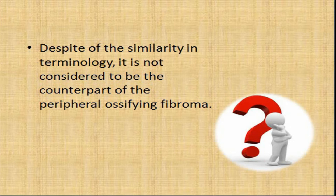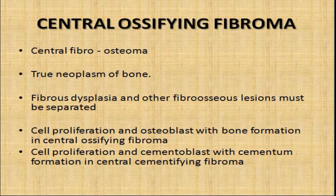The synonym for central ossifying fibroma is central fibroosteoma. It is a true neoplasm of bone, and before confirming it as central ossifying fibroma, you must exclude fibrous dysplasia and other fibrous lesions. Central ossifying fibroma shows cell proliferation and osteoblasts with bone formation, while central cementifying fibroma shows cell proliferation and cementoblasts with cementum formation.